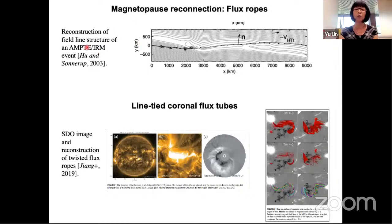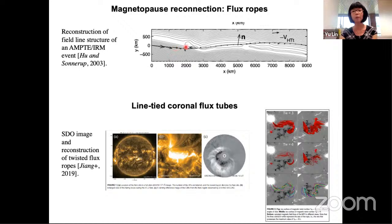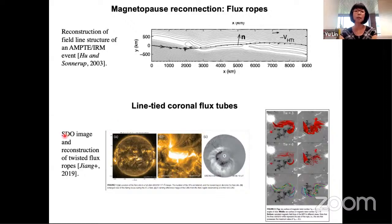A spacecraft crossing the magnetopause can reconstruct the detailed structures along it. This work by Hull and Sonnerup uses reconstruction of field line structure based on satellite crossings and magnetohydrodynamic equilibrium. The field lines are not simply open from one side to the other — they form loops. In 3D geometry, we also see line-tied corner flux tubes, which are also flux ropes. Solar Dynamics Observatory images show emission radiation tracing field lines and energetic particles, with different reconstruction approaches revealing twisted field lines associated with flares and varying twist numbers TW.